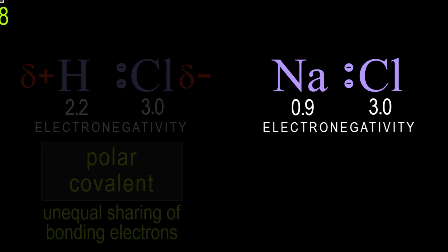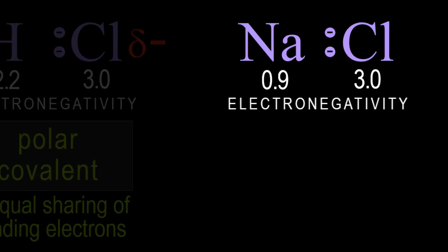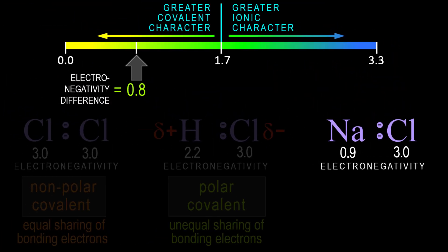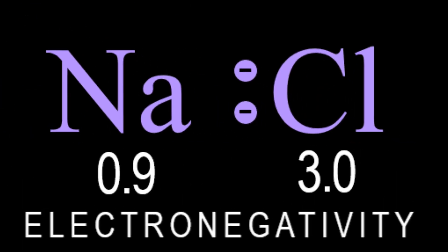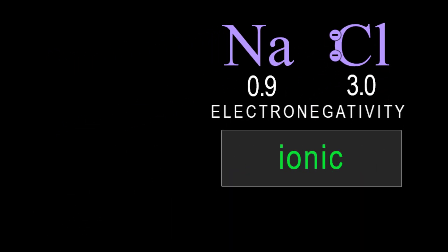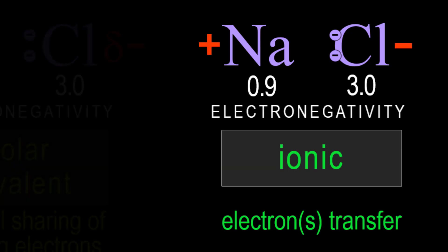Let's look at an even larger electronegativity difference, here between sodium and chlorine. Sodium has an electronegativity of 0.9, and so the difference is 2.1, meaning rather than a sharing of electrons, sodium has transferred its valence electron to chlorine, which creates an ionic bond, a transfer of electrons. This creates a full positive charge on the sodium and a full negative charge on the chlorine.